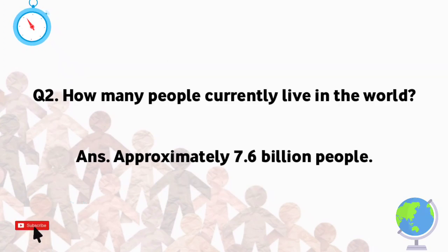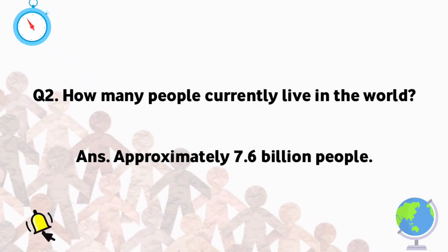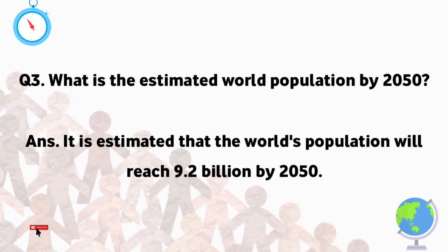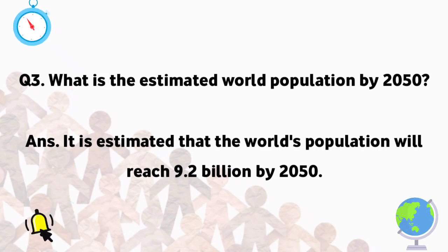How many people currently live in the world? Approximately 7.6 billion people. What is the estimated world population by 2050? It is estimated that the world's population will reach 9.2 billion by 2050.